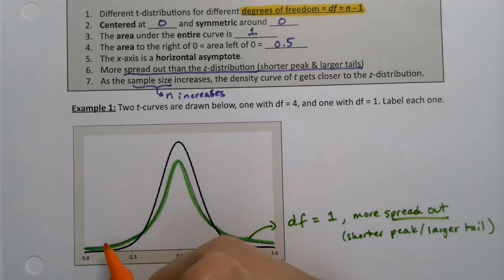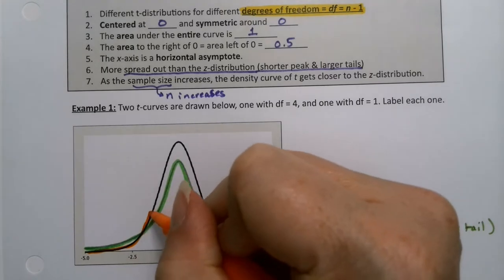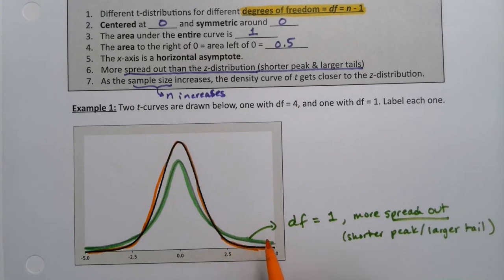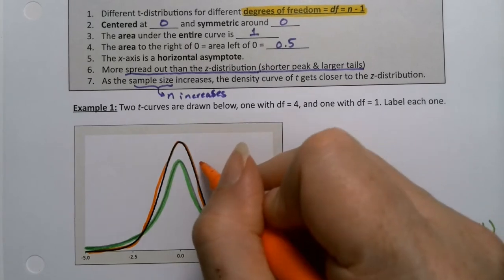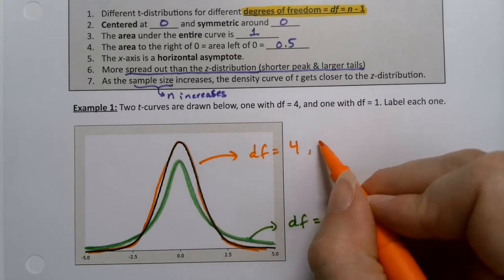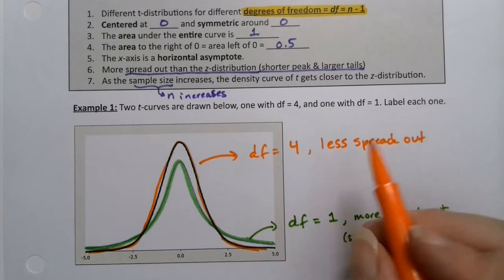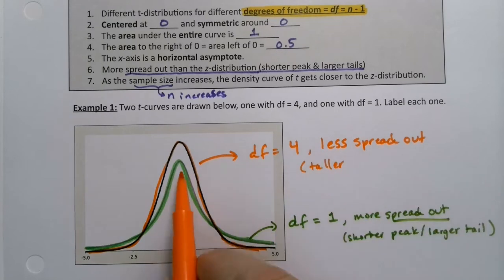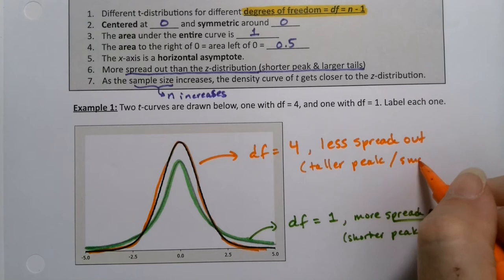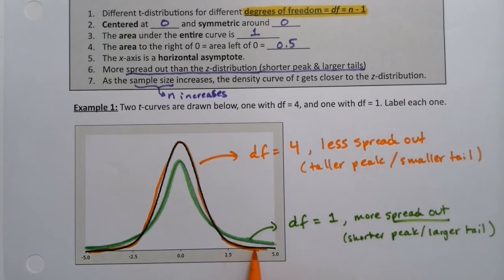This other curve right here, which has, it's kind of below it and then crosses over and is up above and crosses back down, is down below. It's got a taller peak and smaller tail. So this would be degrees of freedom is four because it has less spread. And the peak is the peak in the middle, and the tail is smaller, you can see it because it's down below right there.